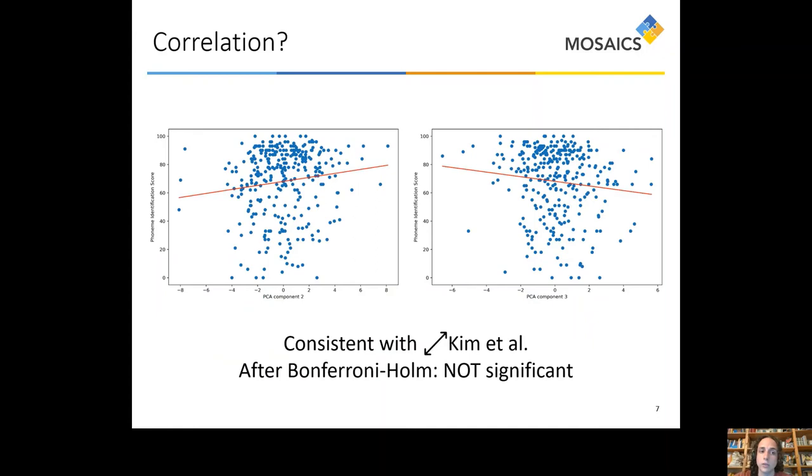Now, the first thing that we checked was for correlation. And while we found a weak correlation, both according to Spearman and Pearson's correlation measures, this was not significant after we applied Bonferroni-Holm correction. And even before applying it, the coefficient factor was very small, up to 0.12. This is consistent with the findings of Kim and others who also found a very weak correlation between dynamic range and tilt and speech recognition score.